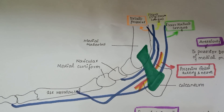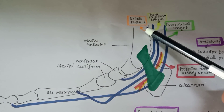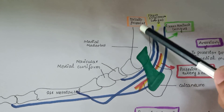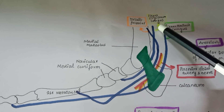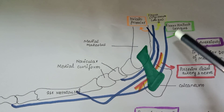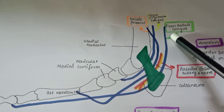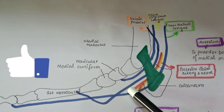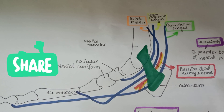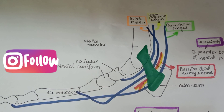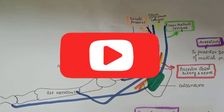Let's see the structures again. First is the tendon of tibialis posterior, next is the flexor digitorum longus tendon, then comes the tendon of flexor hallucis longus, and the last structures are the posterior tibial artery and nerve. So this is all about the flexor retinaculum of the leg.